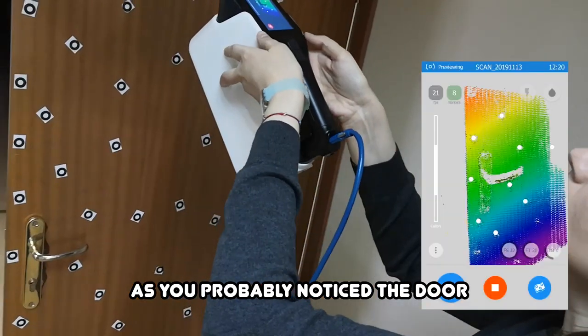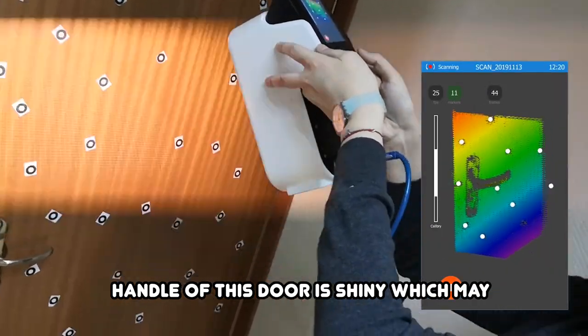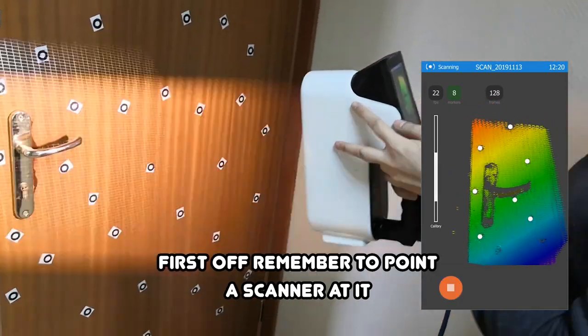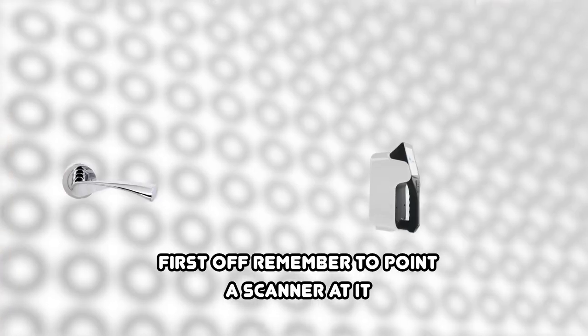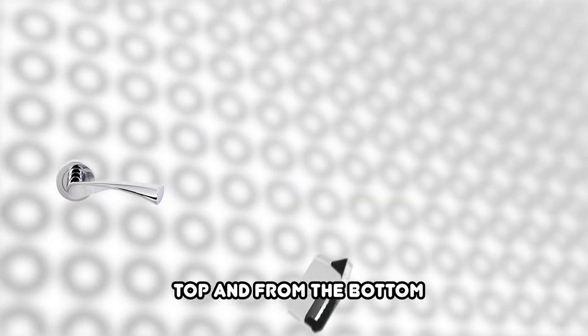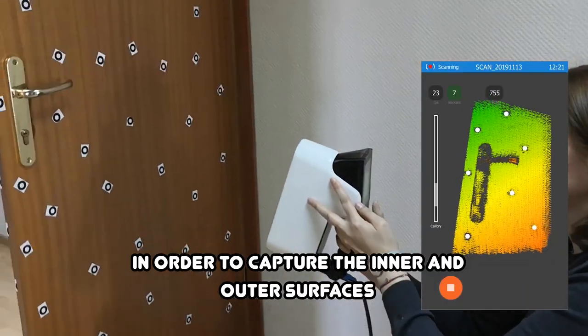As you probably noticed, the door handle of this door is shiny, which may require some extra time to scan it. First off, remember to point a scanner at it not only from a side, but also from the top and from the bottom in order to capture the inner and outer surfaces.